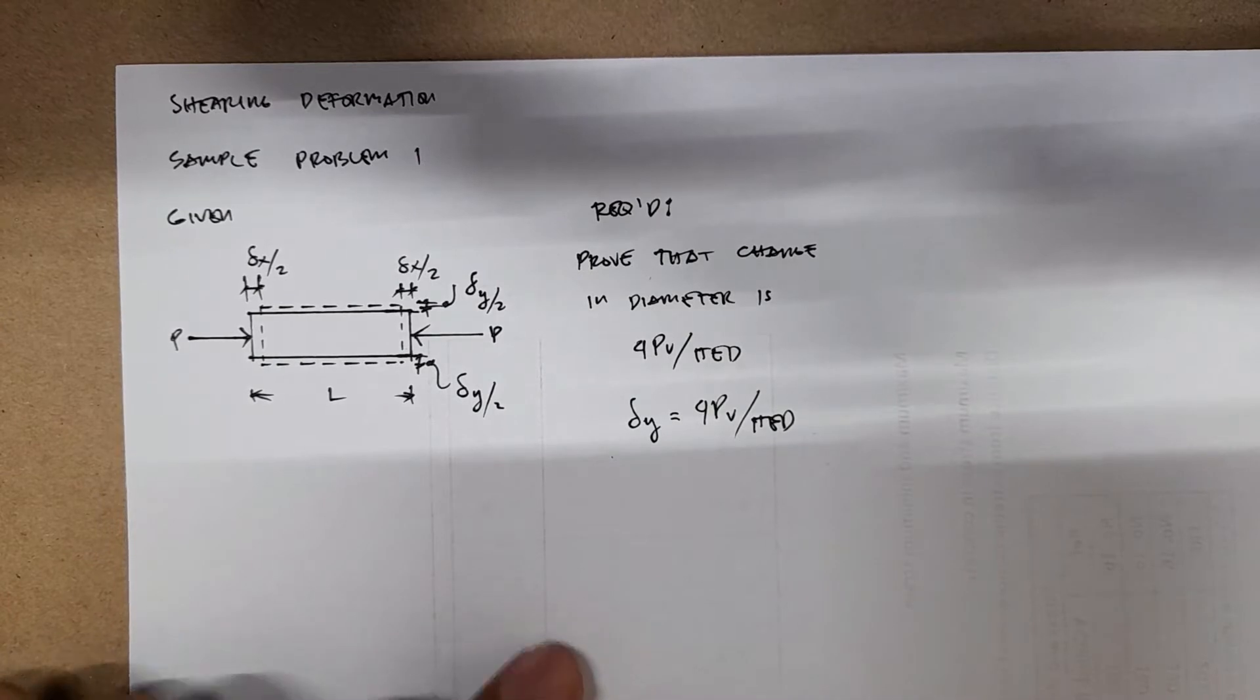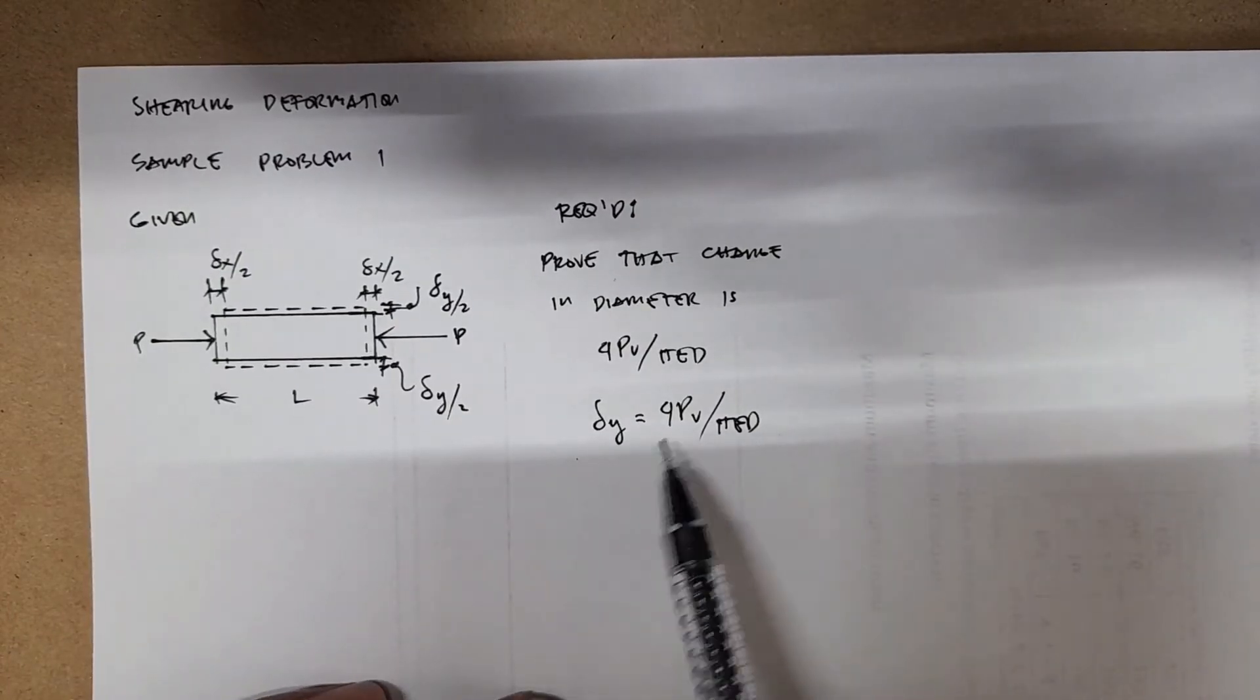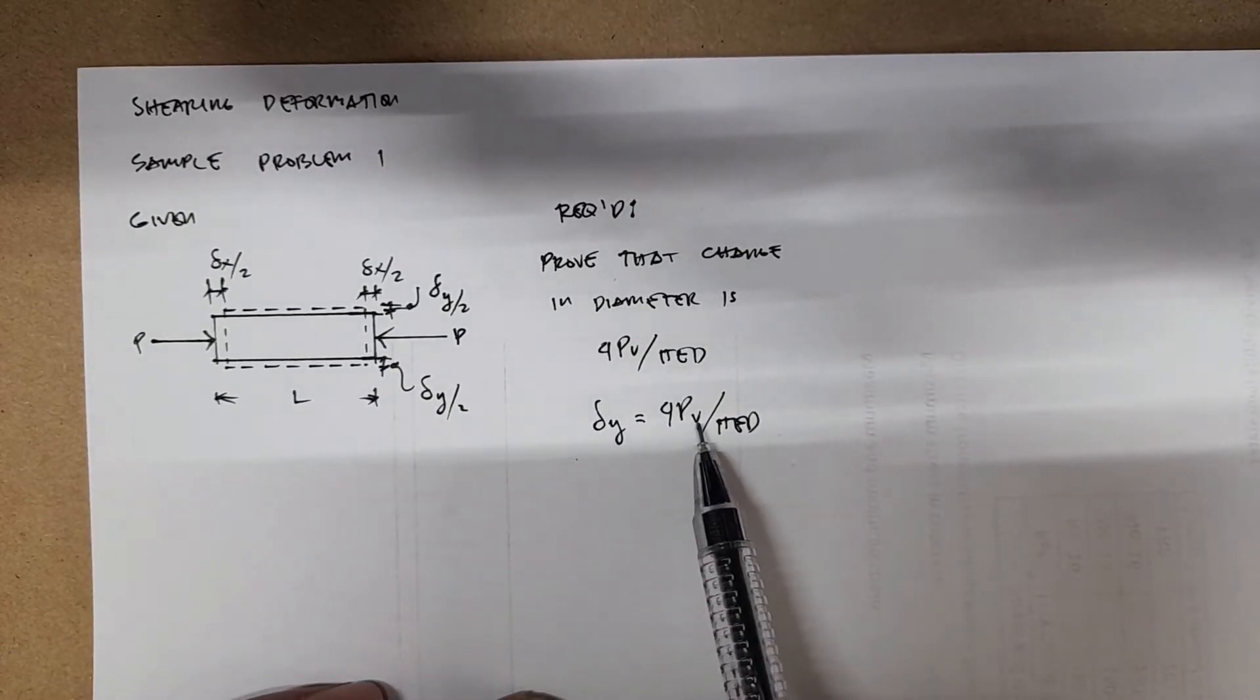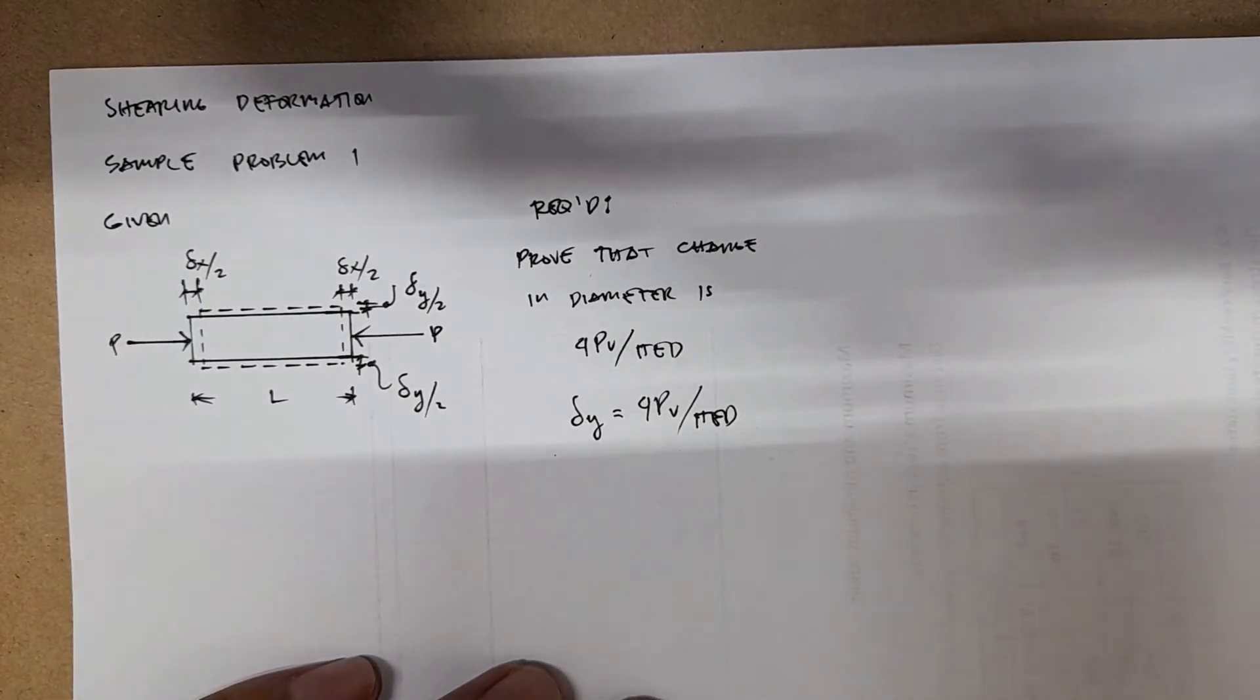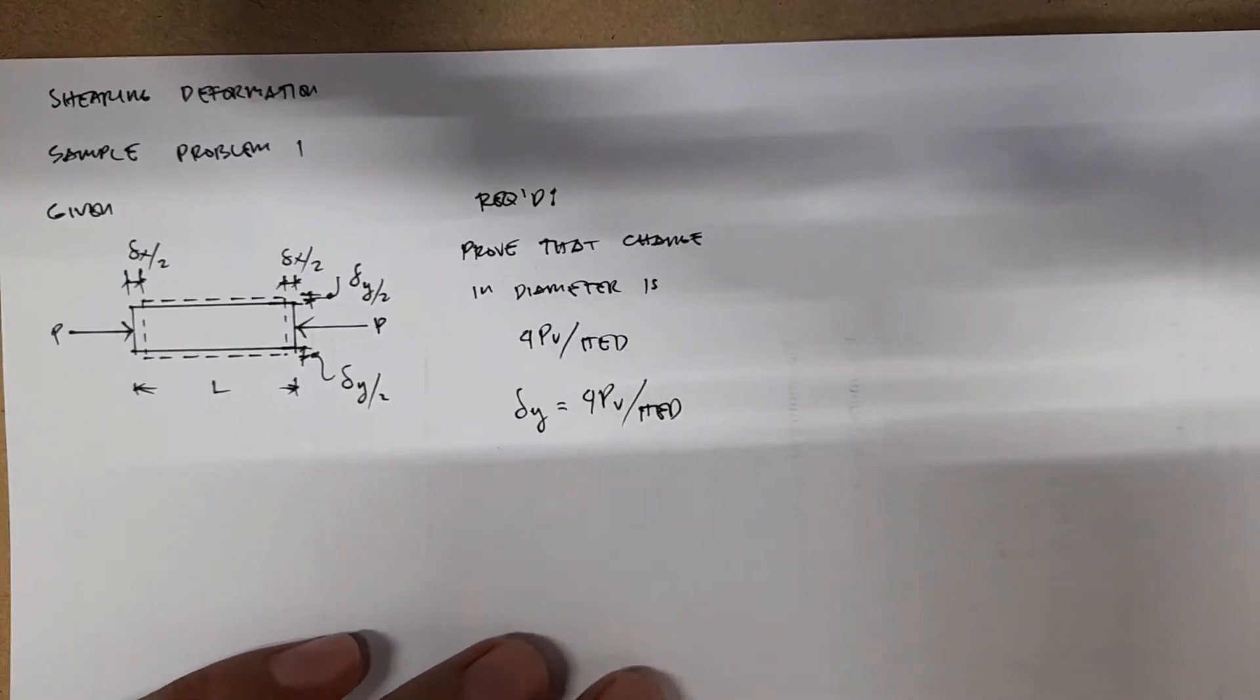And solving the deformation in the y-direction. So we have the P is the force, we have the V is the Poisson's ratio, and then πE, E is the modulus of elasticity, and D is the diameter.